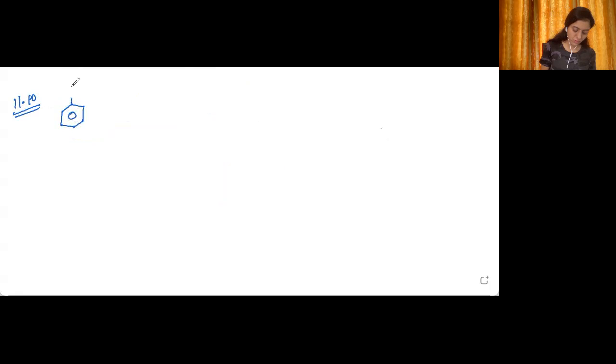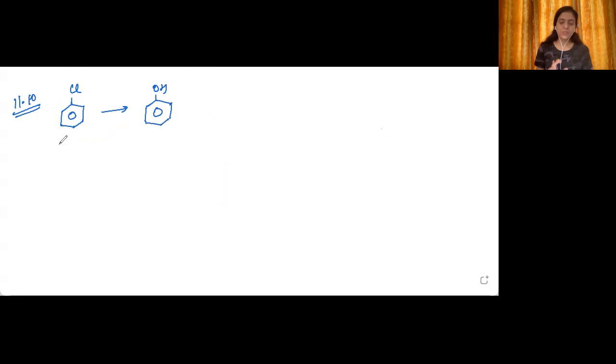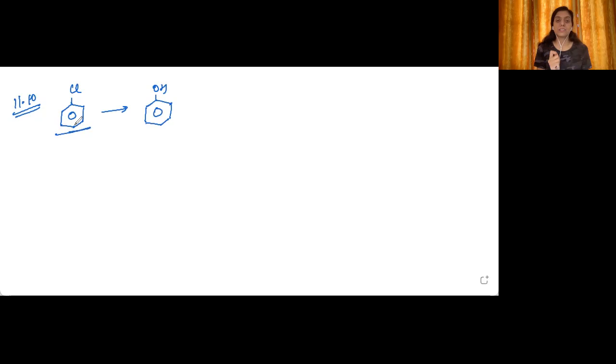Let's move into question number 10. Question 11.10: write the chemical reaction for the preparation of phenol from chlorobenzene. We have chlorobenzene and need to convert it to phenol. If you look at this reaction carefully, it is a nucleophilic substitution reaction. But the problem is benzene does not show nucleophilic substitution — it shows electrophilic substitution. So to replace Cl with OH, we need to give harsh conditions to the reaction so that the C–Cl bond breaks.